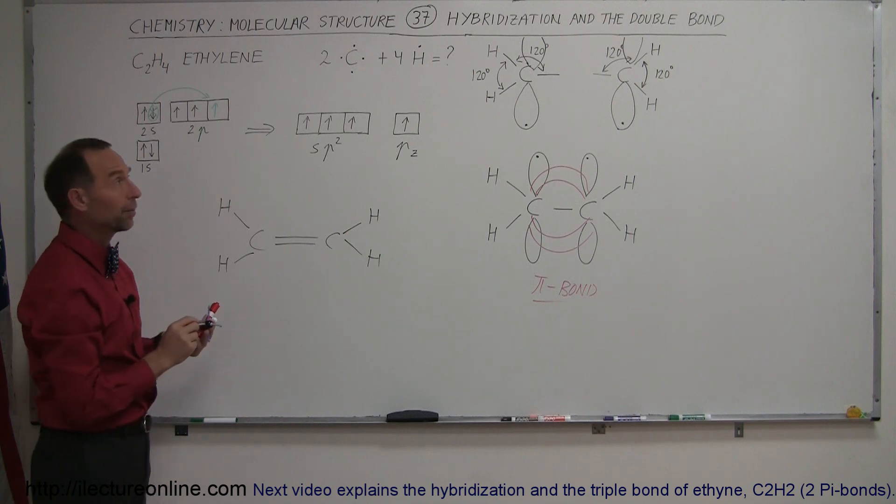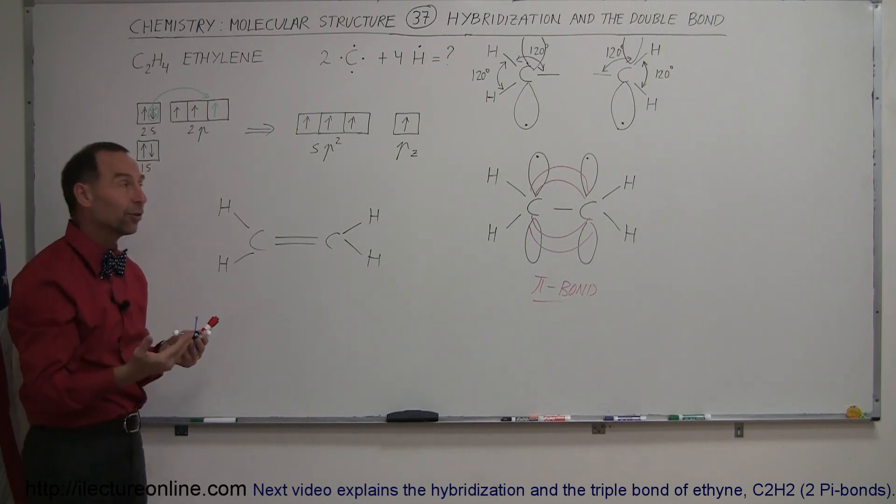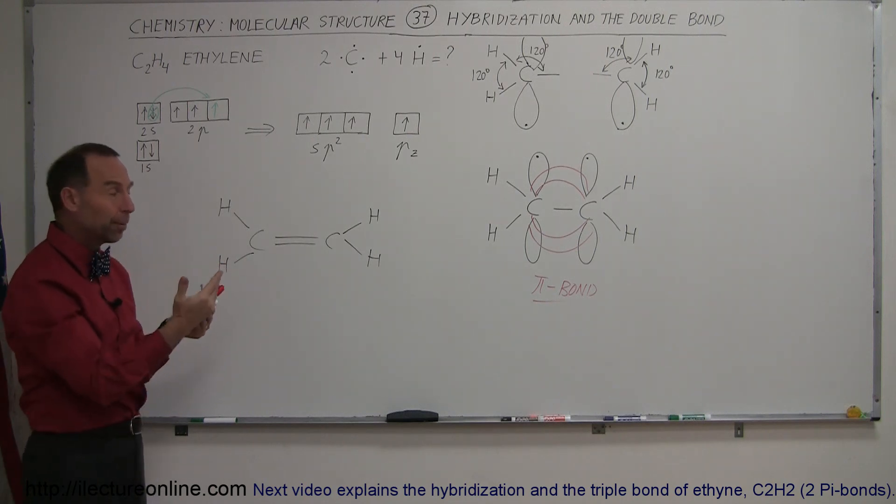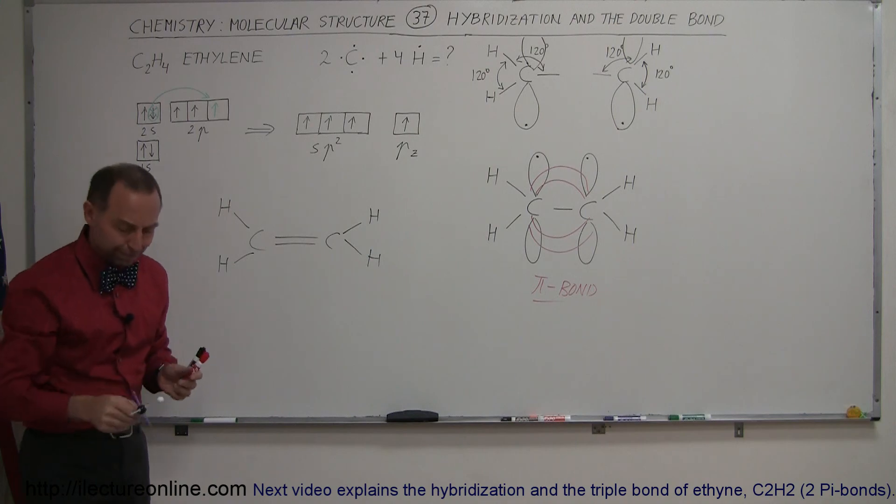So there you go. That's what we call hybridization with a double bond. And on the next video we'll see the hybridization with two pi bonds, so therefore a triple bond and see what that looks like. Thank you.